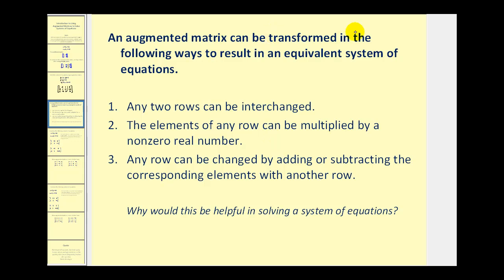An augmented matrix can be transformed in the following ways to produce an equivalent system of equations that is easier to solve. We are allowed to interchange any two rows. Any elements of any row can be multiplied or divided by any non-zero real number, as long as we apply that operation to the entire row. And lastly, any row can be changed by adding or subtracting the corresponding elements with any other row.